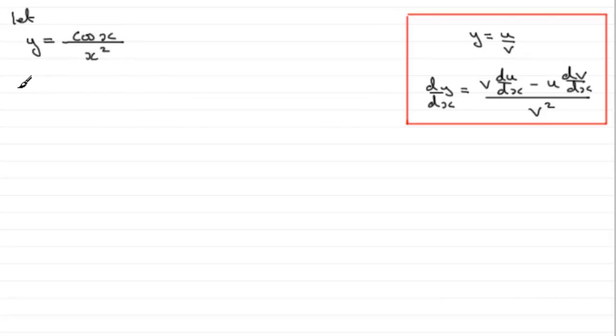To differentiate it, therefore dy by dx equals - you should be able to go straight into it. We know that it's the bottom of the fraction times the differential of the top of the fraction. The bottom of the fraction is x squared, put that in brackets, now multiply it by the differential of the top of the fraction. Differential of cos x is going to be minus sine x.